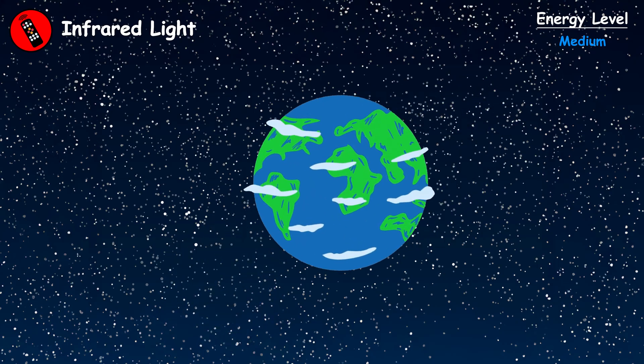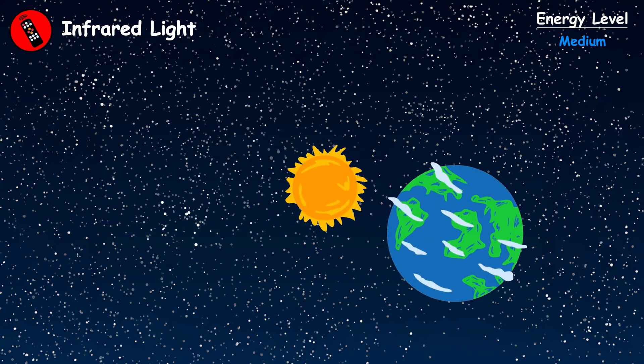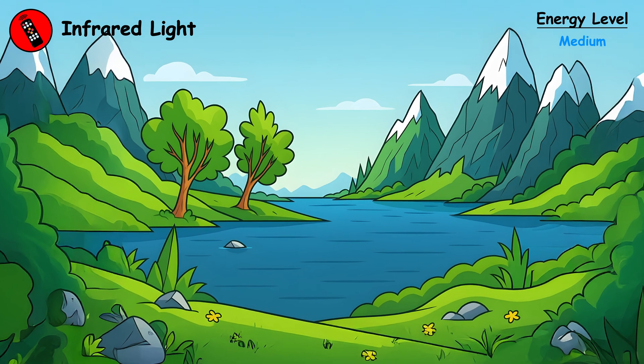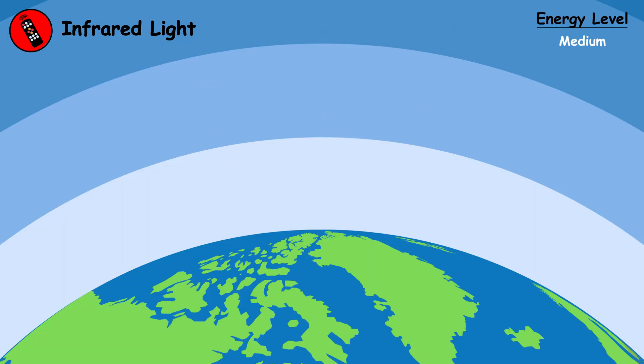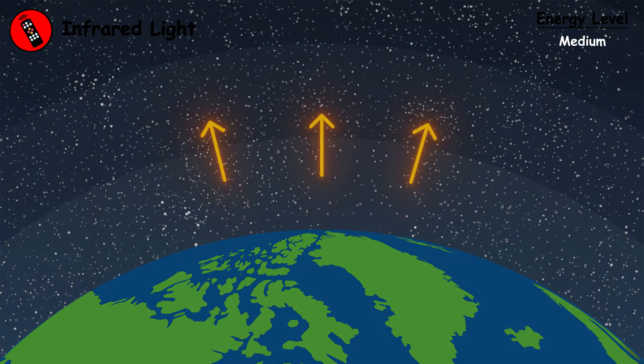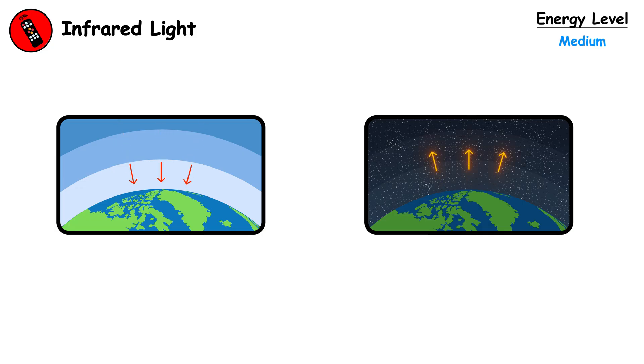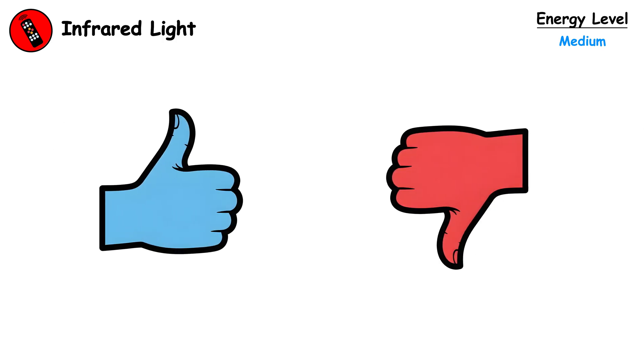This is the primary mechanism for solar heating of our planet's surface. Without infrared radiation, Earth would be a frozen wasteland. The ground absorbs its energy during the day and radiates it back at night, creating the day-night temperature cycle. This constant energy exchange drives weather patterns and ocean currents. It has both beneficial and potentially harmful effects.